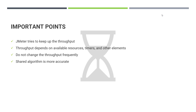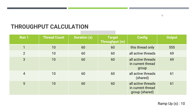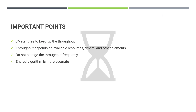If you are changing the throughput frequently based on functions or parameters, you will not be able to achieve the target. As mentioned, the shared algorithm is more accurate. Run 4 and run 5 achieve almost exactly the throughput we are targeting. Run 2 and run 3, being non-shared mode, will go beyond the target throughput, while shared mode will always try to keep your throughput as close to the target as possible. These points are very important when implementing the constant throughput timer.